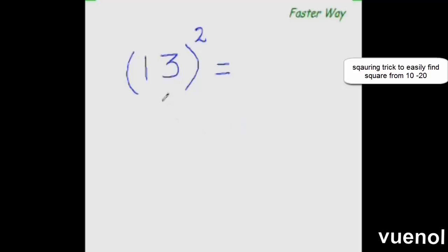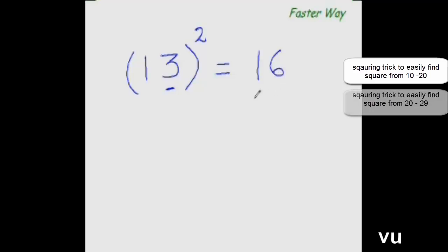To find the square of any number from 11 to 19, all you need to do is add the units digit to the entire number. So 3 plus 13 is 16. So these are the first two digits of your answer. Now for the last digit, you find the square of the units digit. So what is the square of 3? It is 9. So the answer is 169.